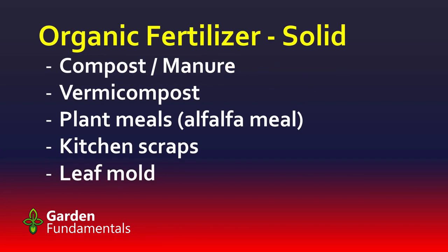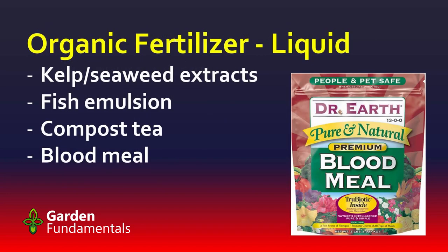I like to break organic fertilizer down into two main groups. The first group I call solid organic fertilizer — this includes things like compost, manure, vermicompost, plant meals like alfalfa meal, kitchen scraps, and leaf mold. Vermicompost might be new to you — this is simply the poop from worms. All of these materials are organic fertilizers, but they also have a lot of bulk. They're solid, they have weight to them, and that bulk is the organic matter that's going to be added to your soil.